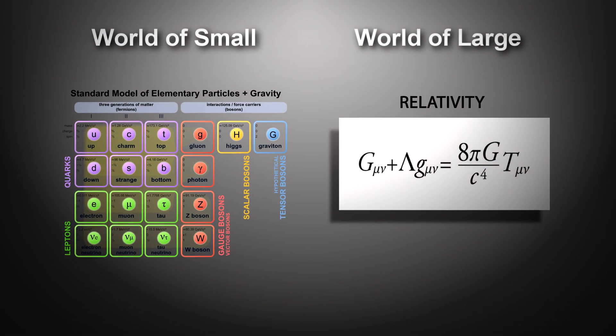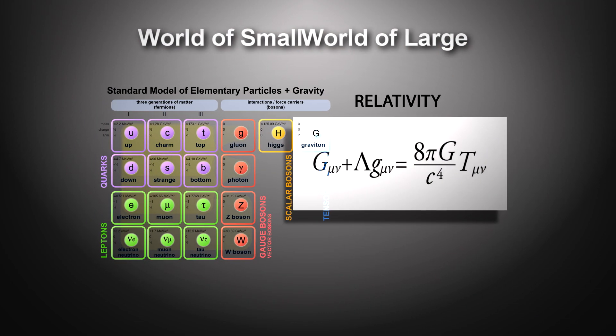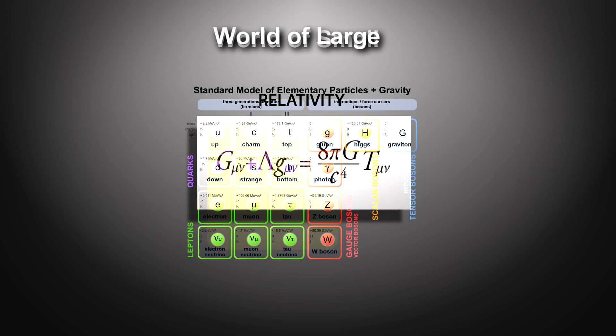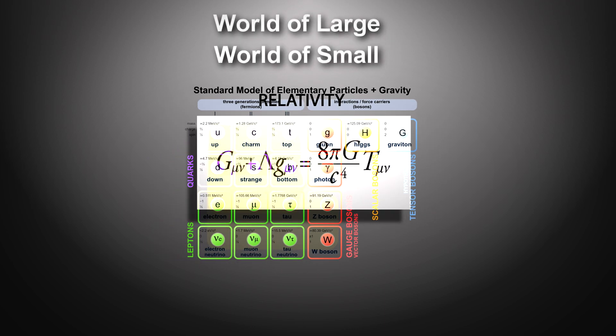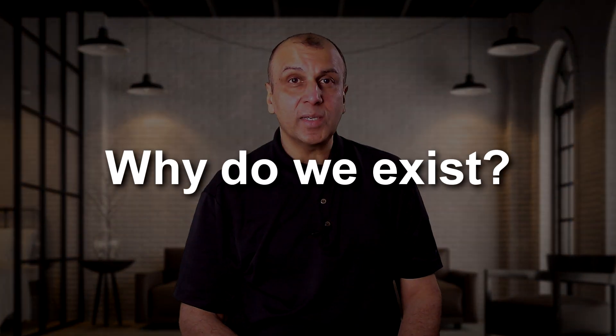String theory attempts to do just that, and if it can, it would unite the large and small worlds of our universe into one set of equations and would explain all particles and forces in the universe. This could be the theory of everything. It could answer one of the biggest questions in cosmology: Why do we exist? What is it, and what does it have to say about reality?